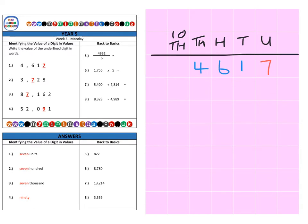And next on to question two. We have three thousand seven hundred and twenty-eight. And again when we look at where the red seven is, it's in the hundreds column. So the value of the seven in question two is worth seven hundred.